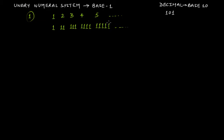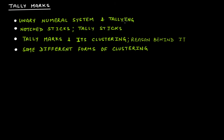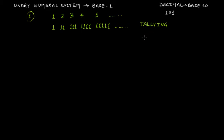The unary numeral system is used in tallying. There are many symbols used for tally. Tallying is basically a kind of counting where you are noting the frequency or the number of occurrences of the same data. Let's take an example: suppose in a field there are 10 cows.